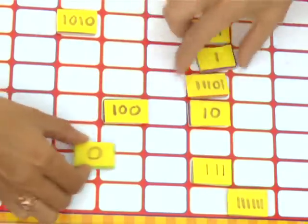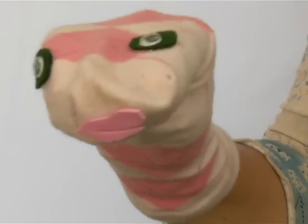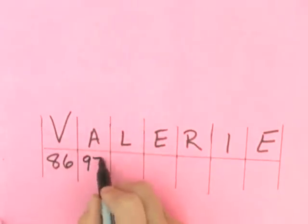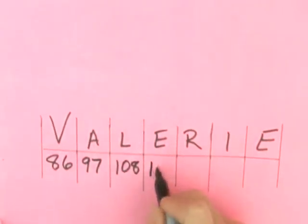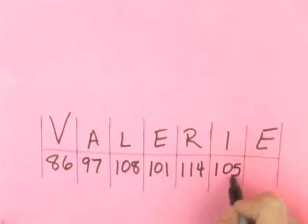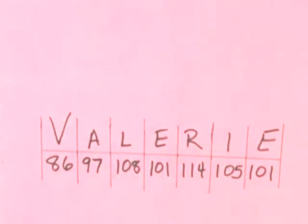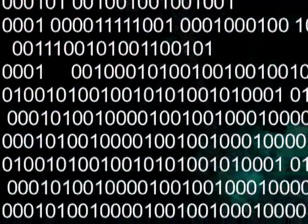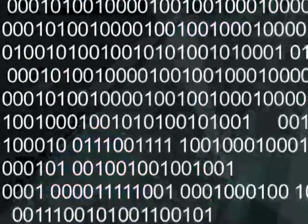The cells store numbers, but the numbers also represent other things. For example, a number can stand for a letter, and numbers in a row can spell a word. That's why they call it code — because the numbers represent other things. Every bit of text, images, music, and even video is stored as a series of numbers.